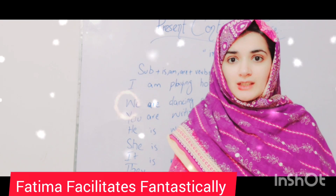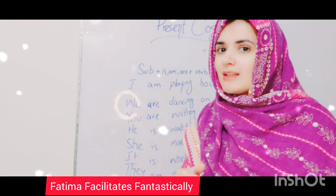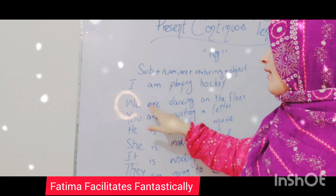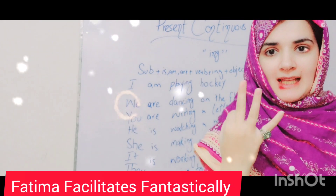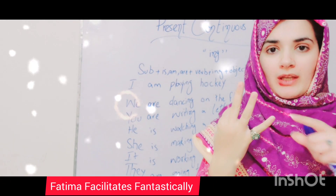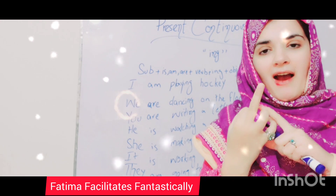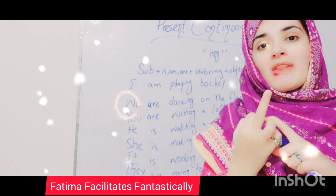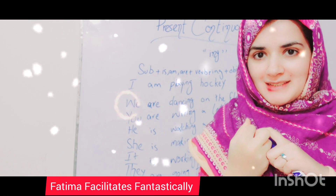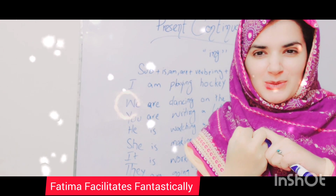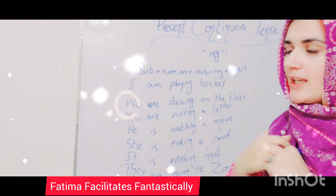Easy! Am, is, and are are the three helping verbs. 'Am' is used with I, 'are' is used with you and they, and 'is' is used with he, she, and it. Easy.